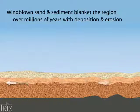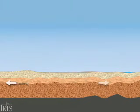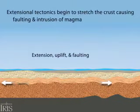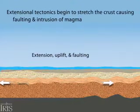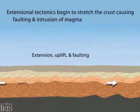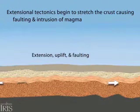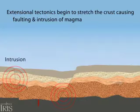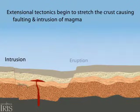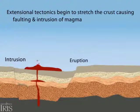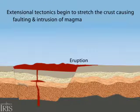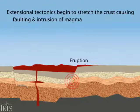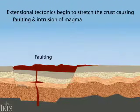After millions of years of continued sediment accumulation, regional extension stretches the plate until it drops along faults in basin-range fashion. During extension, magma rises from the mantle and lava erupts on the surface. Normal faulting, accompanied by large earthquakes, offsets the lava during continued extension.